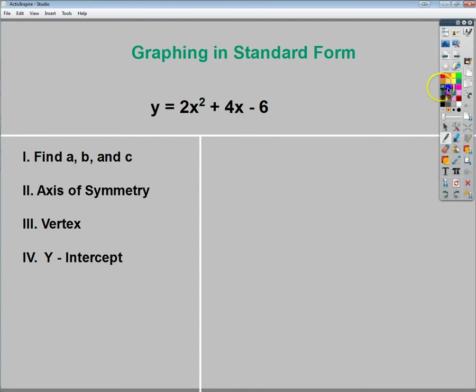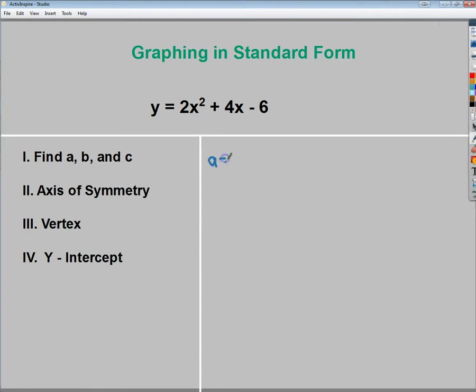So if I'm going to do it by hand, the first thing that I need to do is find my a, b, and c values and kind of write them down. So my a value is 2. My b value is 4. And my c value is negative 6.